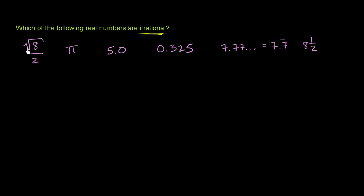So let's see what we have here. So we have the square root of 8 over 2. So square root of 8, if you take the square root of a number that is not a perfect square, it is going to be irrational.